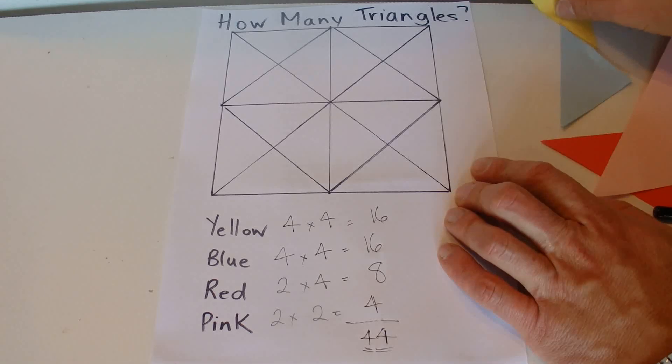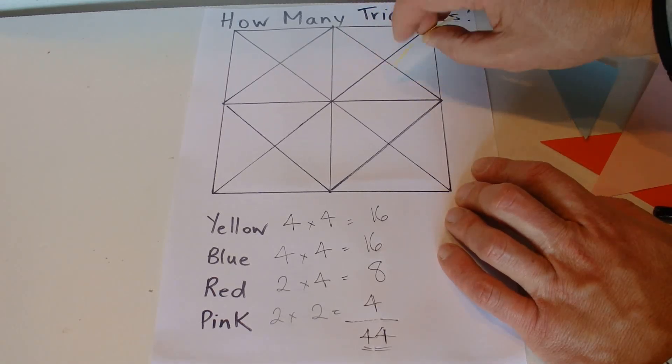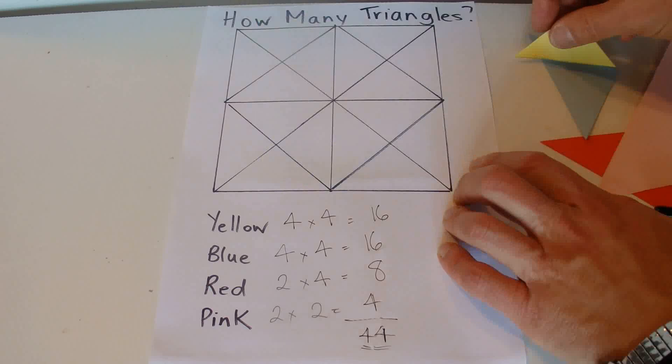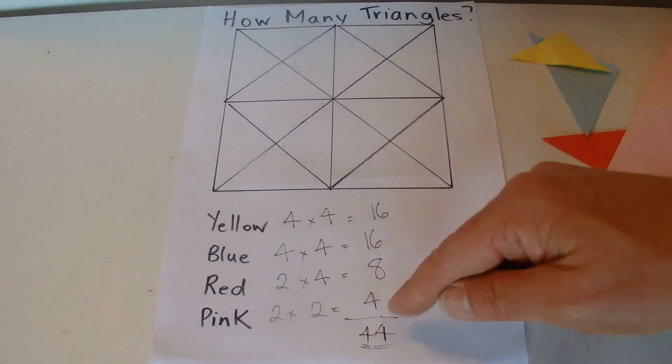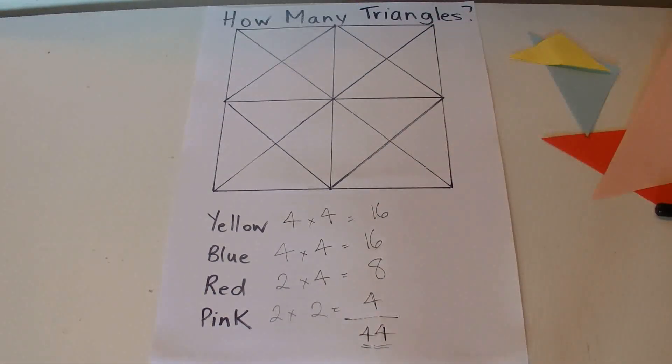So that's a simple way of working out how many triangles are in the grid by breaking it up into all the different sizes and working your way through logically, counting them and coming up with the final answer. Hope you enjoyed the video, thanks for watching, bye.